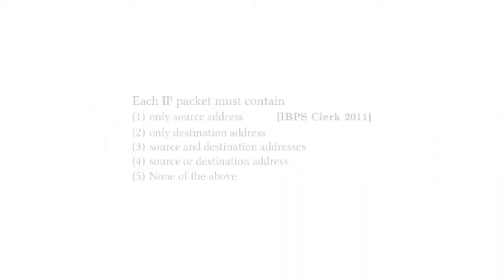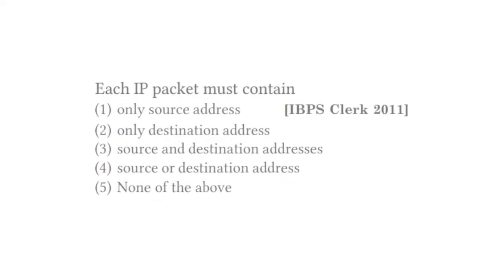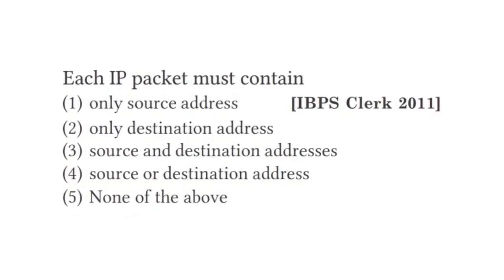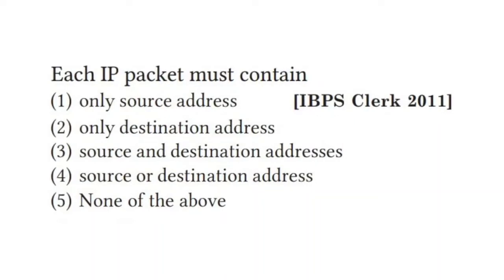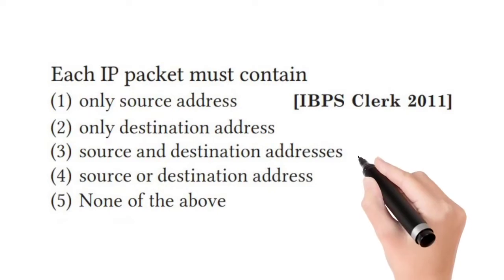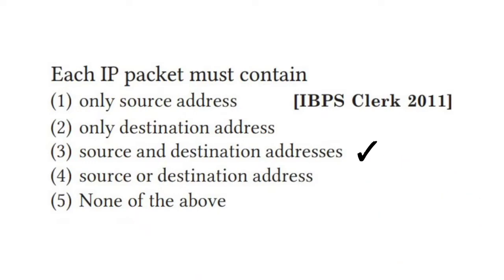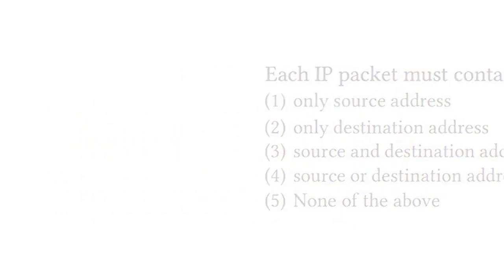Next question: which things should be present in an IP packet? An IP packet contains source and destination — where it is from and where it is going. The correct answer is third option.